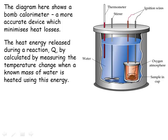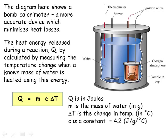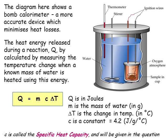Firstly, we work out how much energy the water must have gained to raise its temperature by the measured amount. We use the equation Q equals MC delta T, where Q is the amount of energy in joules, M is the mass of water that was heated by the reaction, and delta T is the change in temperature. C is a constant called the specific heat capacity, which is usually given the value of 4.2 joules per gram per degree C.